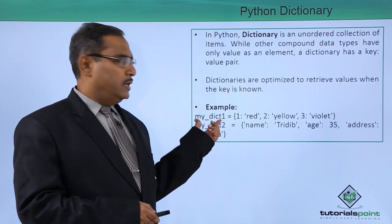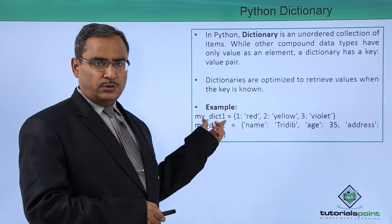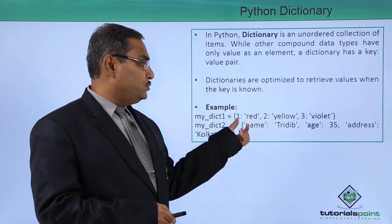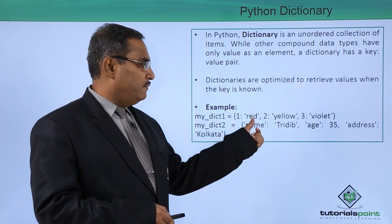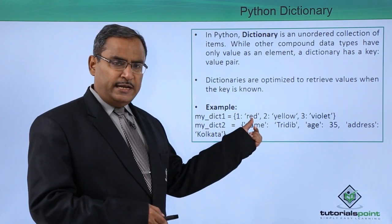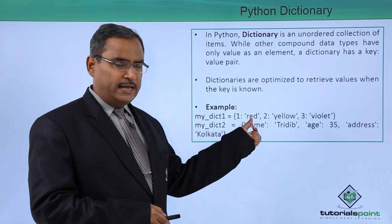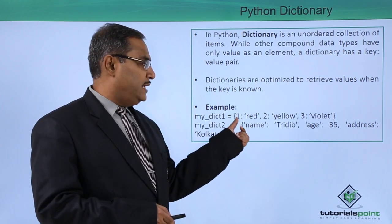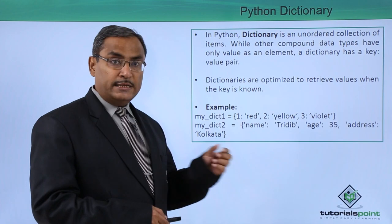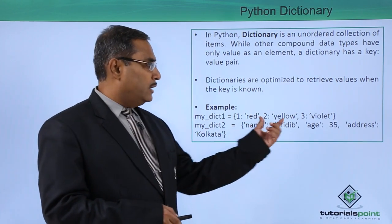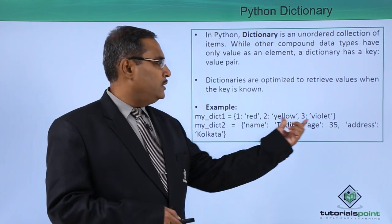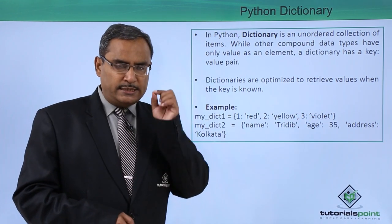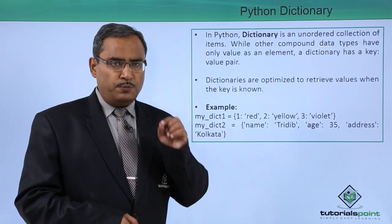Here we have considered one example: my_dict with key 1 and value 'red'. So 1 is the key and red is the value. Since red is a string it should be enclosed within single quotes. This key-value pair must be separated by a colon, then a comma for the next member. Each and every member is a key-value pair.